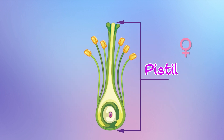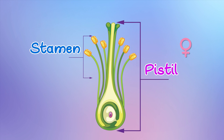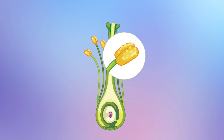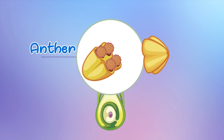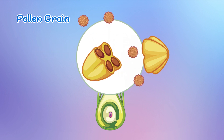This is called the pistil. It is the female part of the flower. This is stamen. It is the male part of the flower. In the stamen, there is an anther, and there are lots of pollen grains in the anther.